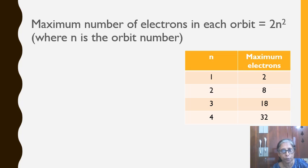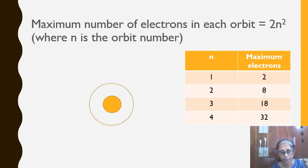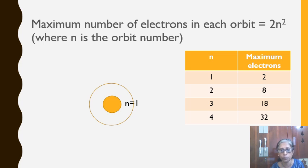Now we'll see how many electrons can be accommodated in each orbit. The formula to find the maximum number of electrons in each orbit is 2N² where N stands for the orbit number. For the first orbit, N=1, so 2×1²=2. The nucleus is here and the first orbit is N=1, so the maximum number of electrons that can be accommodated in the first shell is 2.